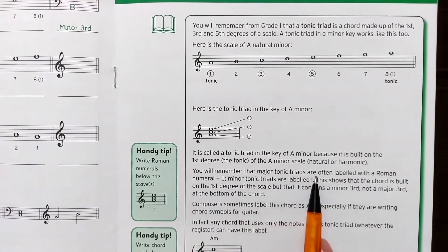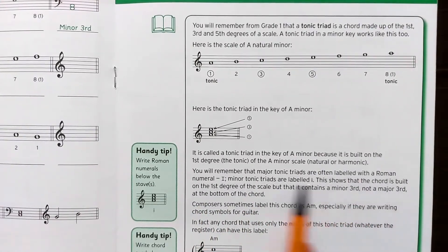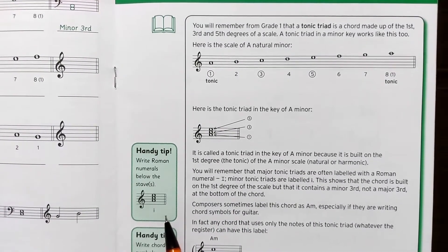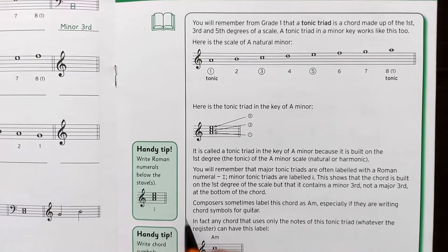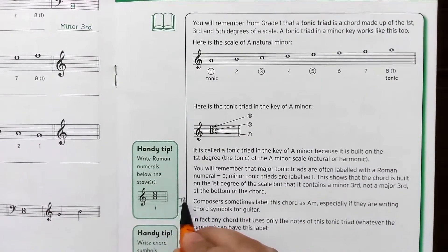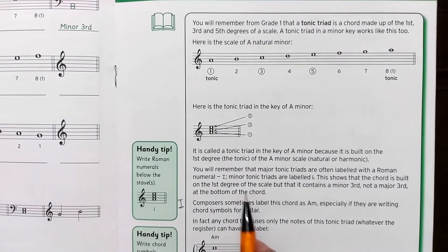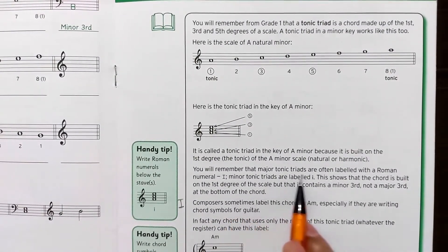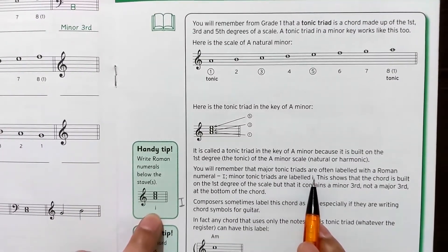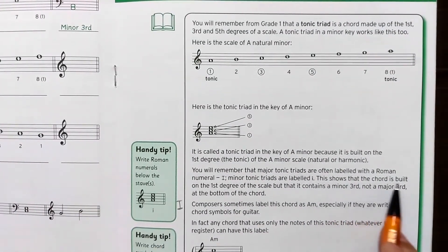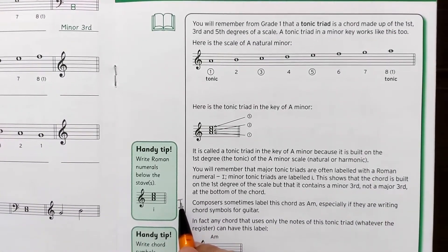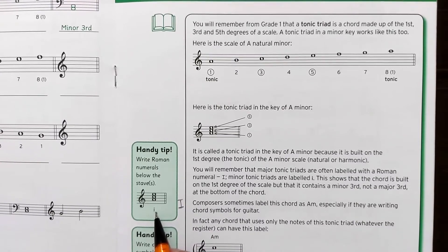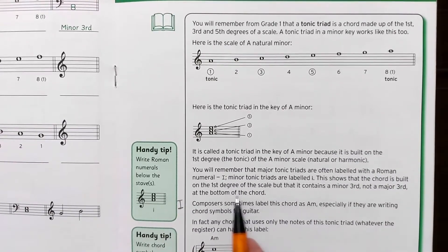You will remember that major tonic triads are often labeled with a Roman numeral one (I). For the major scale we put it as a capital Roman numeral, and for minor we label it as a small Roman numeral one (i). This shows that the chord is built on the first degree of the scale.